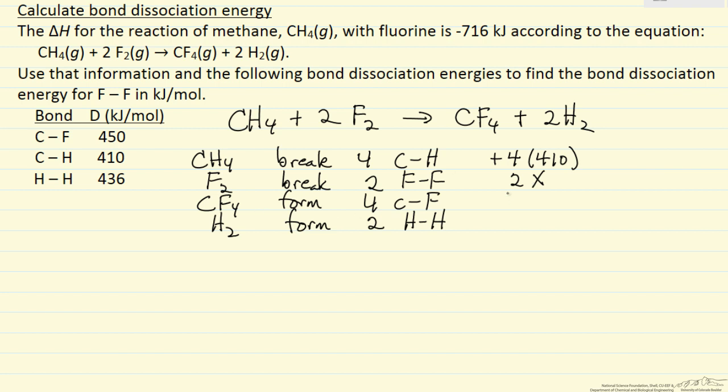We're going to form 4 CF bonds. So we form it, it's exothermic, so that's minus, and then we're going to form 2 hydrogen bonds, the same thing, it's exothermic. These are all kilojoules.